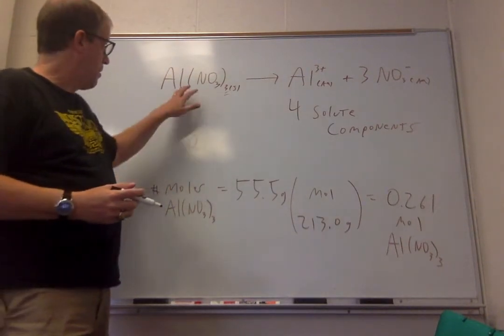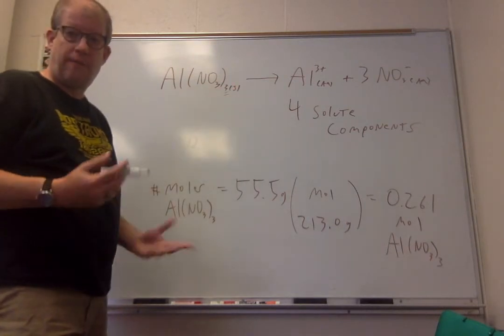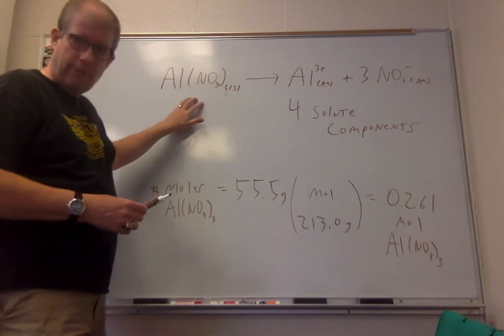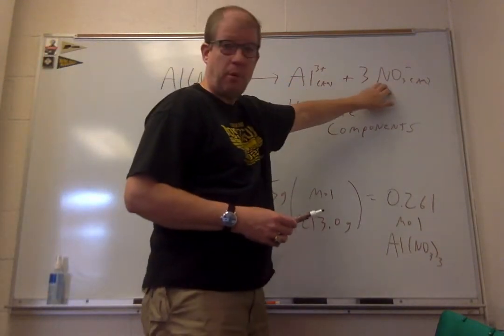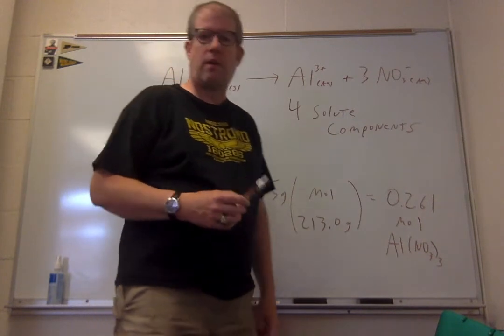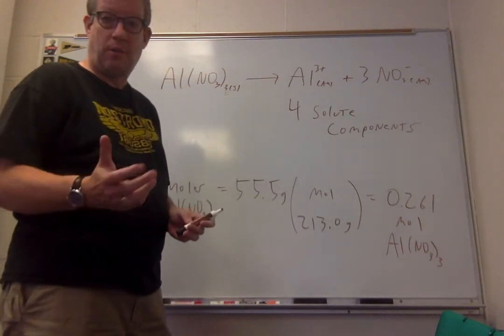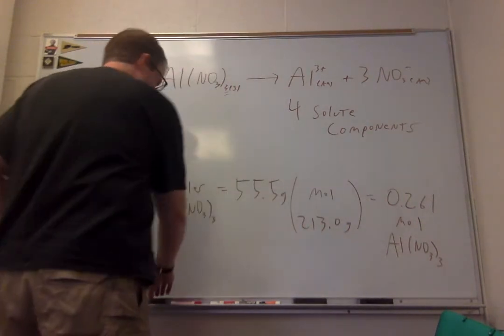So for every molecule of this that dissolves, there's four ions that are formed in solution. For every mole of this that dissolves, there's one mole of aluminum 3 plus and three moles of nitrate present in the solution for a total of four moles of solute. So what we've got to do is multiply that number by four.